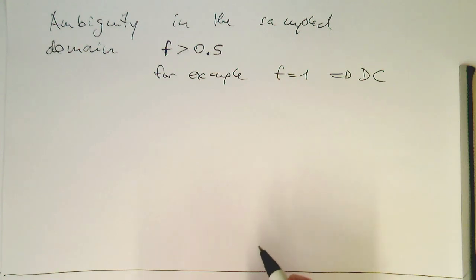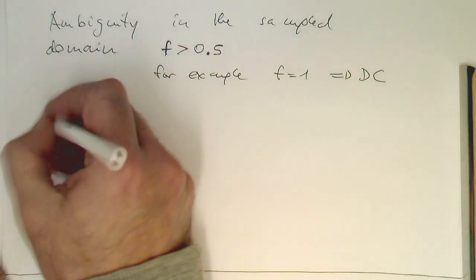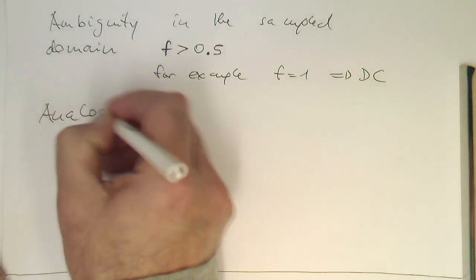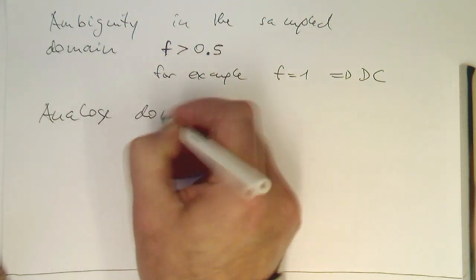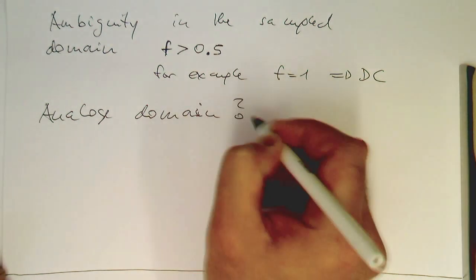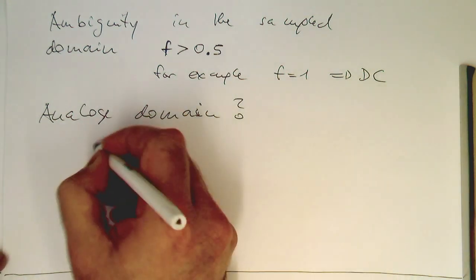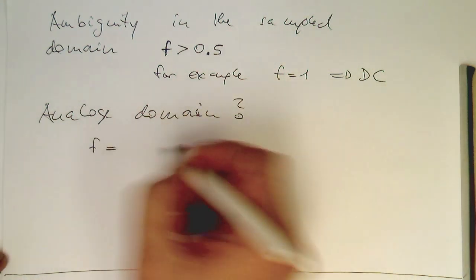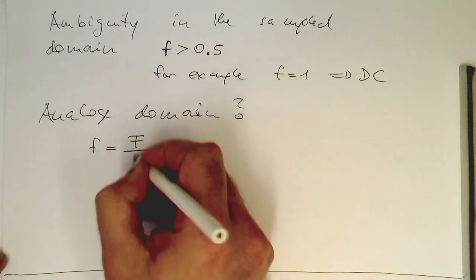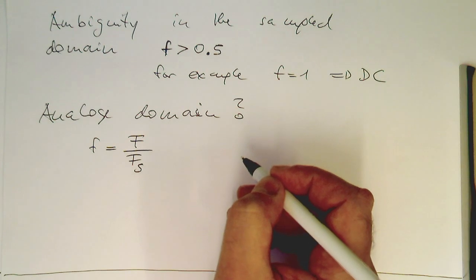So how does it look like in the analog domain? So in the analog domain, remember our mapping between the analog and the sample domain is our normalized frequency is f divided by f s. So this was our mapping.